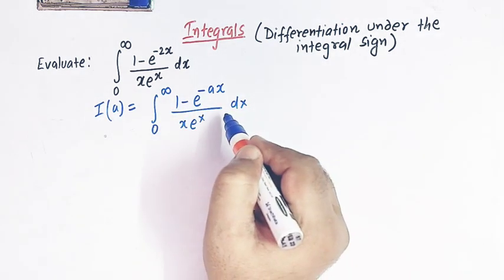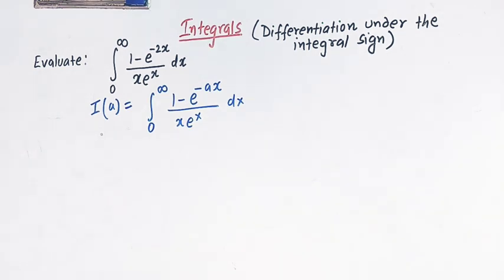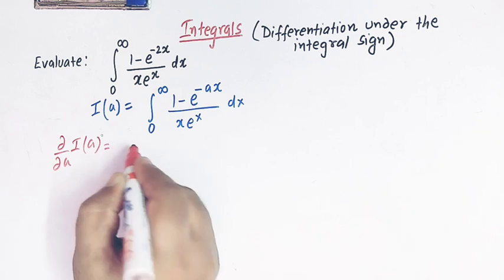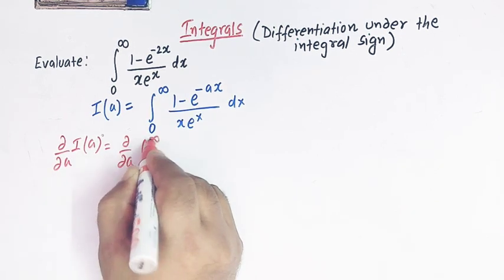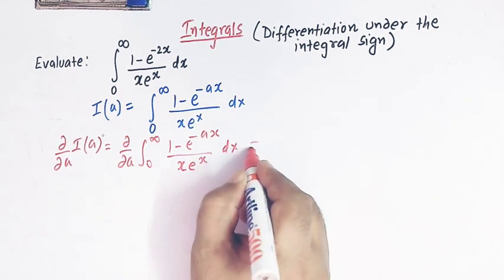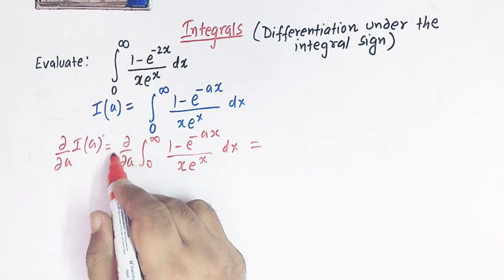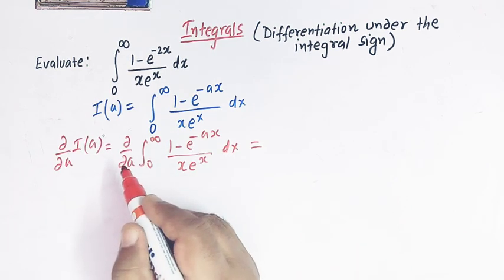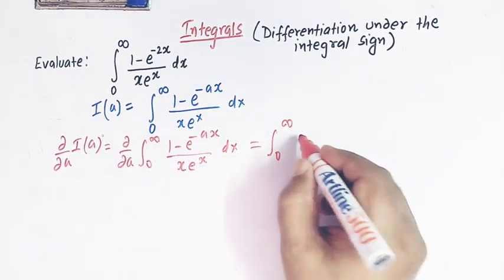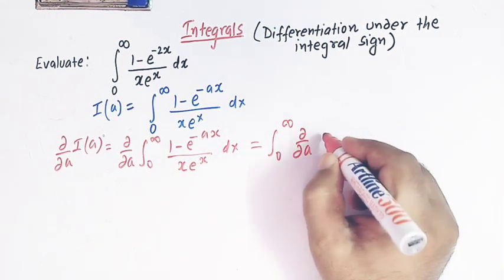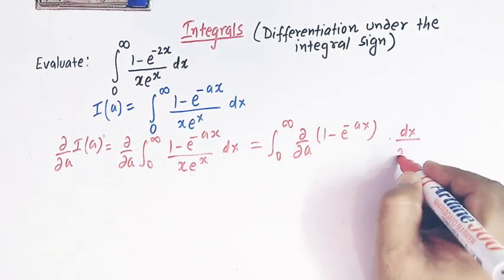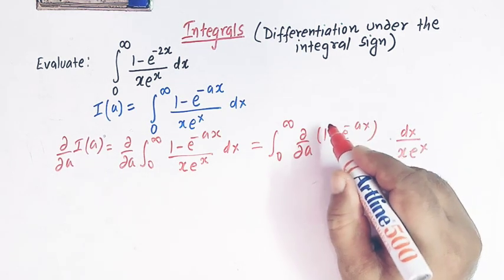We'll differentiate this integral with respect to a, keeping the variable x as constant — that is, we partially differentiate with respect to a. So we compute del/del(a) of I(a), which equals del/del(a) applied to the integral from 0 to infinity of (1 minus e raised to minus ax) divided by x e raised to x, dx. We can take the operator del/del(a) inside the integral sign.